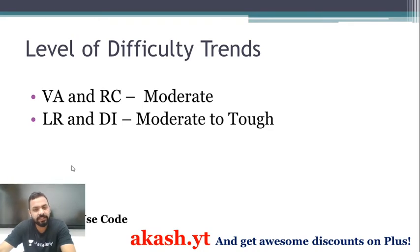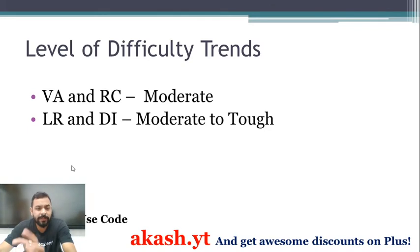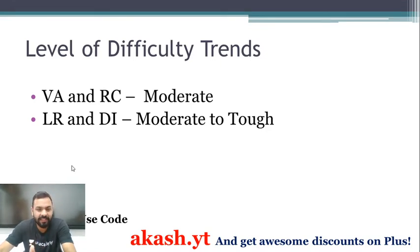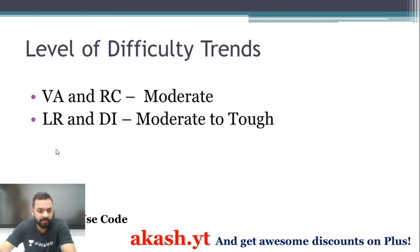Logical Reasoning and Data Interpretation is always moderate to tough. Out of the total 32 questions, there will always be 3 to 4 sets that are moderate, and the rest will be tough. The tough sets are ones you simply will not be able to complete within the one-hour time limit. So the most important skill in LR & DI is identifying the right sets to attempt.